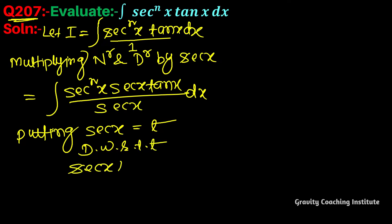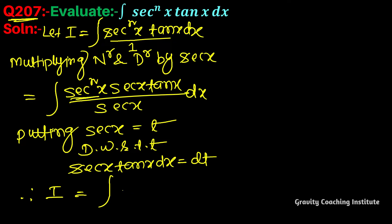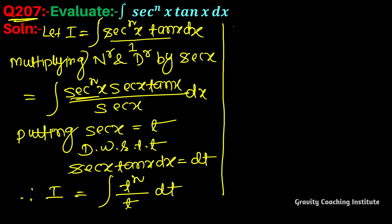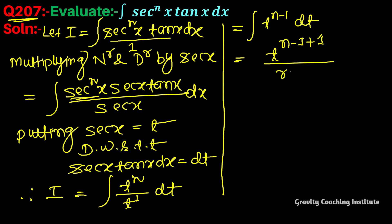The differentiation of sec(x) is sec(x)tan(x), so dt equals sec(x)tan(x)dx. Therefore I equals integration of t to the power n minus one dt, which gives t to the power n minus one plus one upon n minus one plus one.